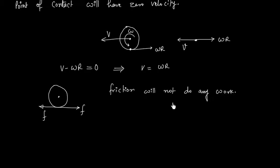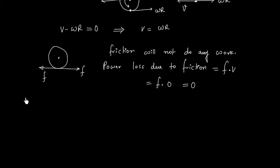And this can be proved - power loss due to friction is equal to F dot V. Velocity is zero, so power loss due to friction is zero. So this means we can apply energy conservation.